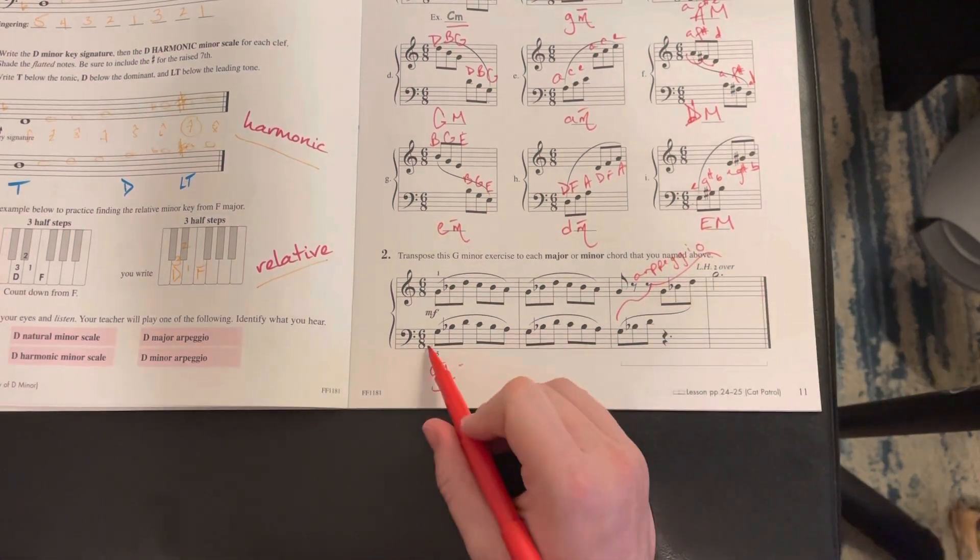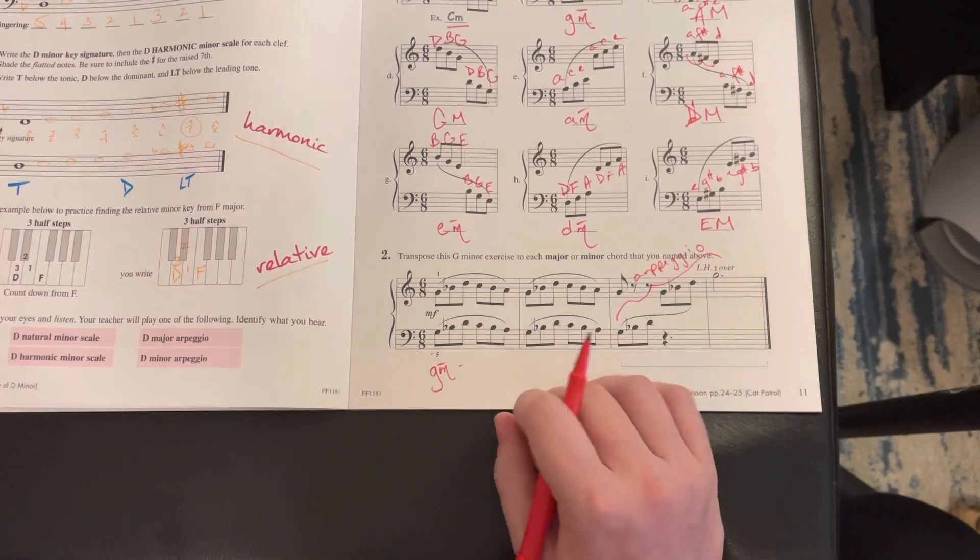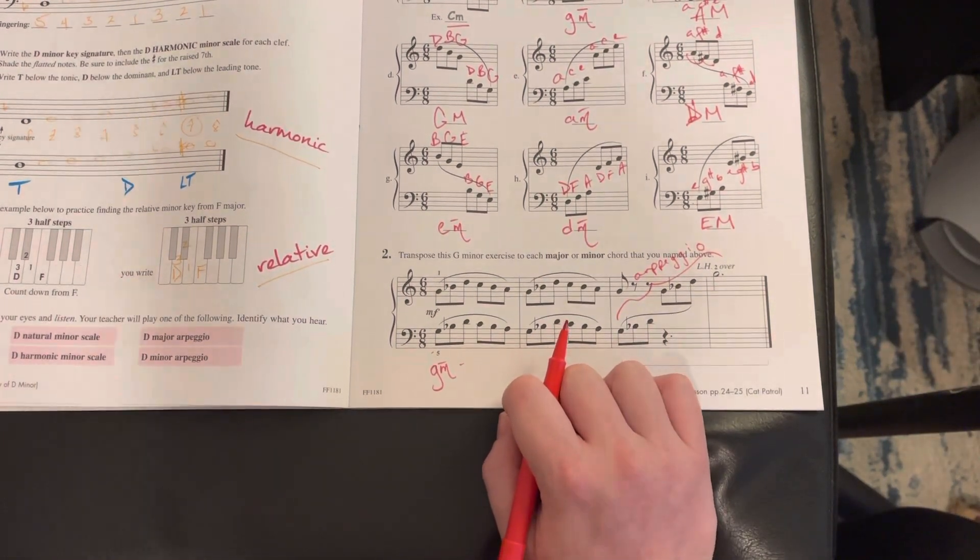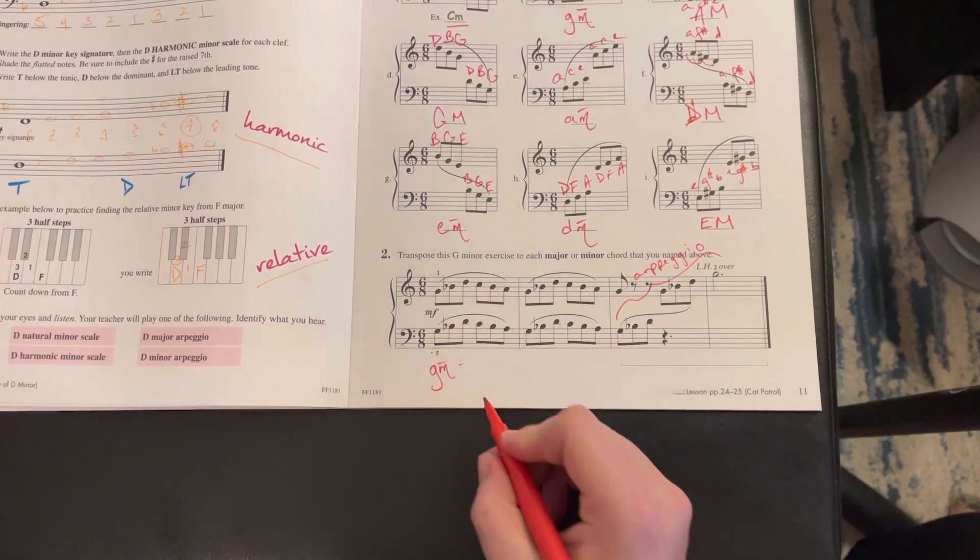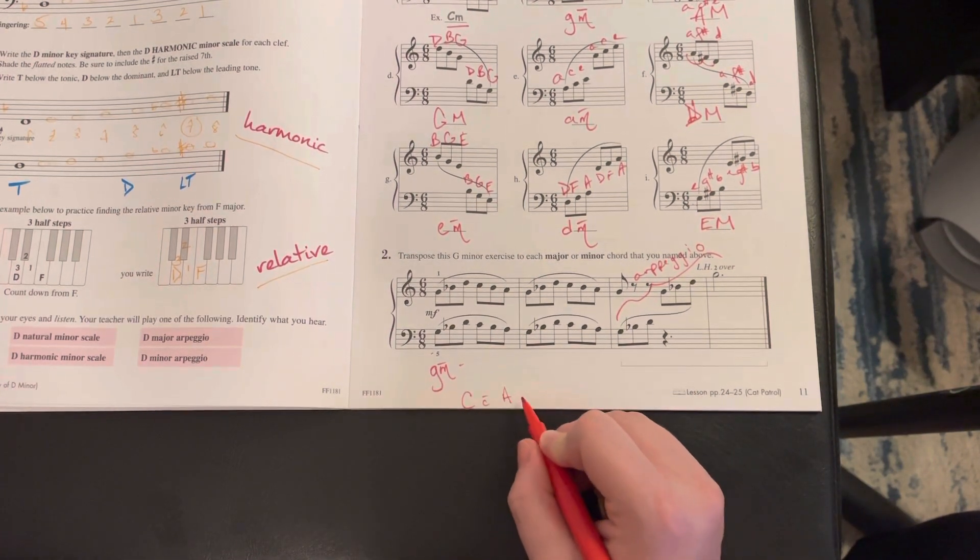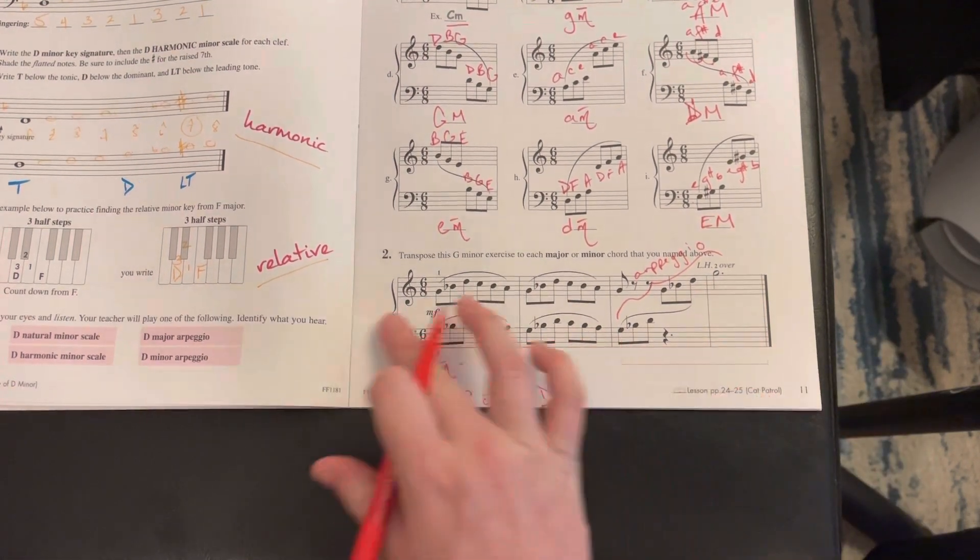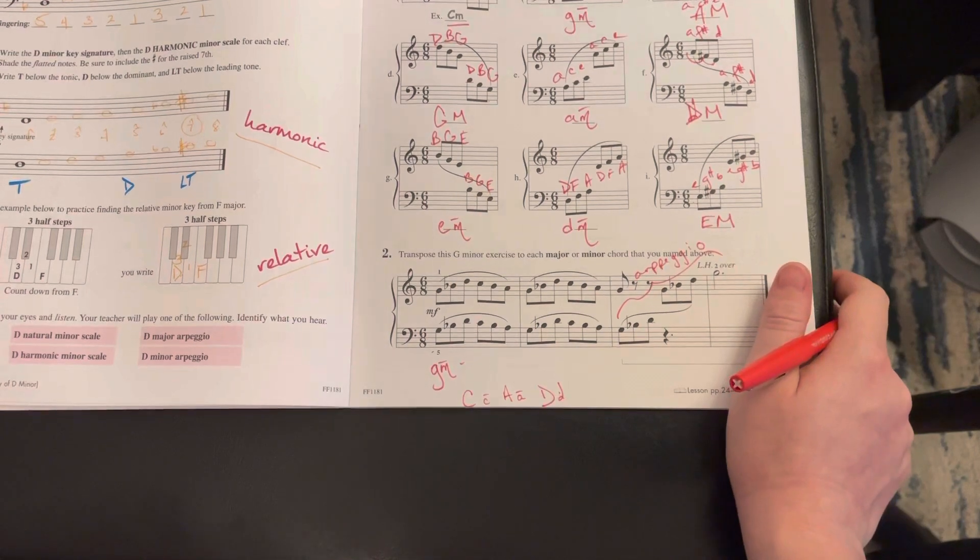So you're just going to play both hands together, G minor chord, and then you can play an A minor chord, A major chord, G major chord. I would make a list at the bottom like C major, C minor, A major, A minor, D major, D minor, so on and so forth, and just play that. It is just a broken chord.